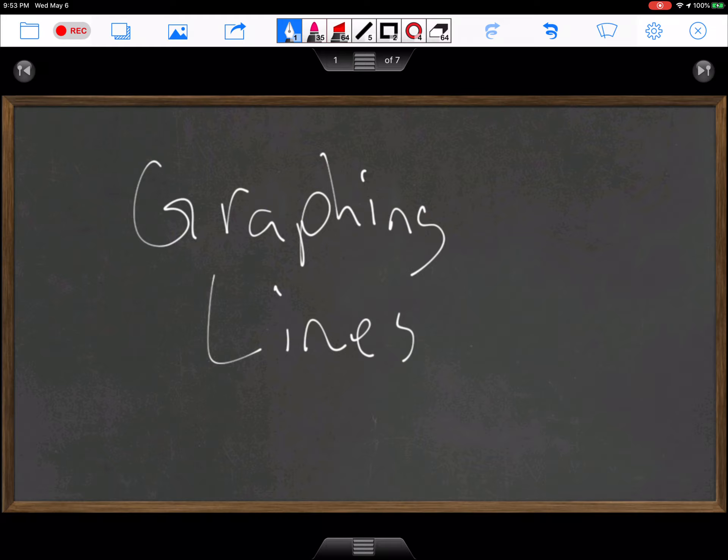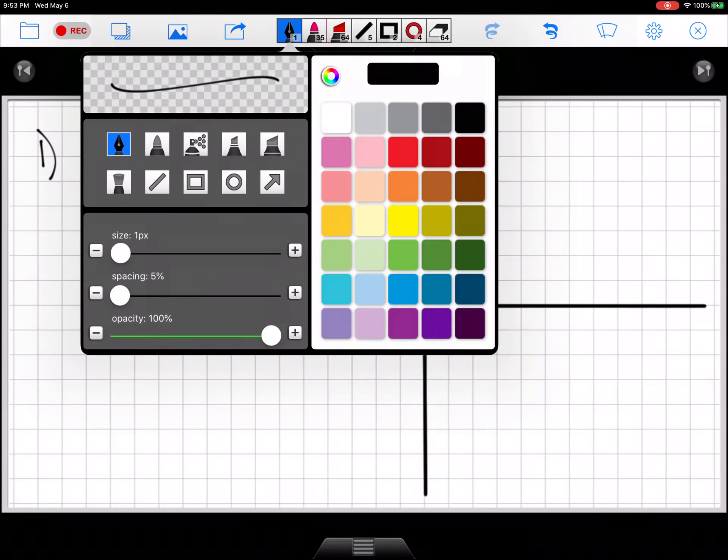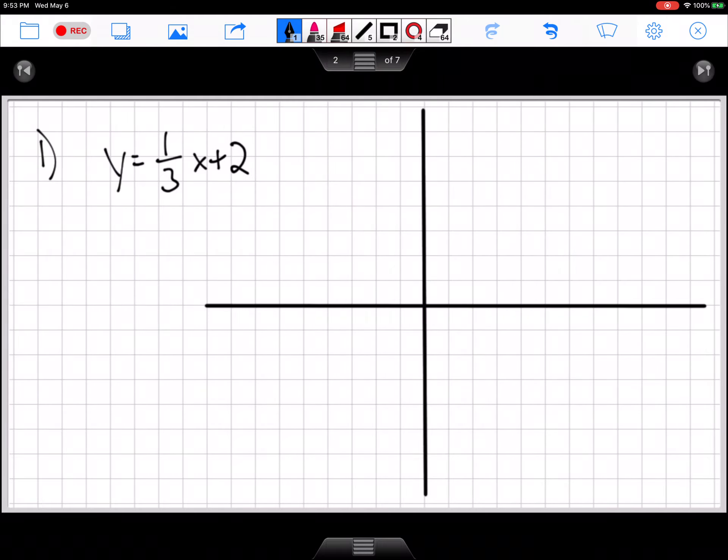So graphing lines. Apologize for that beep. I'm not sure what makes that happen, but it happens. All right. So here is my linear function, y equals one third x plus 2. Because of this plus 2, it's not going to go through the origin, so we might already identify this as non-proportional in previous lessons.